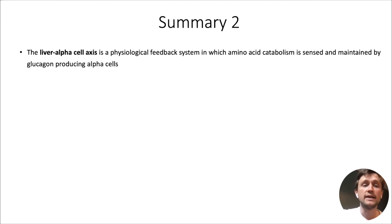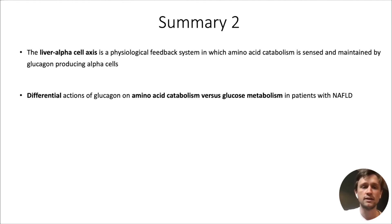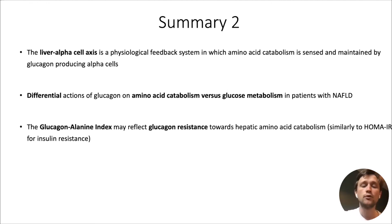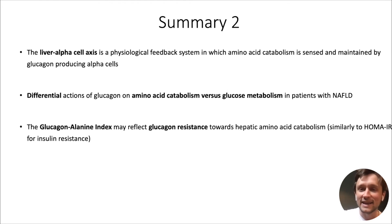In summary, the liver-alpha cell axis is a physiological system in which amino acid catabolism is sensed and maintained by glucagon-producing alpha cells. There may exist differential actions of glucagon on amino acid catabolism versus glucose metabolism in patients with NAFLD. The glucagon-alanine index may reflect glucagon resistance towards hepatic amino acid catabolism, and we believe it may be a parameter analogous to HOMA-IR for insulin resistance — we hope you will validate this in your own cohorts.